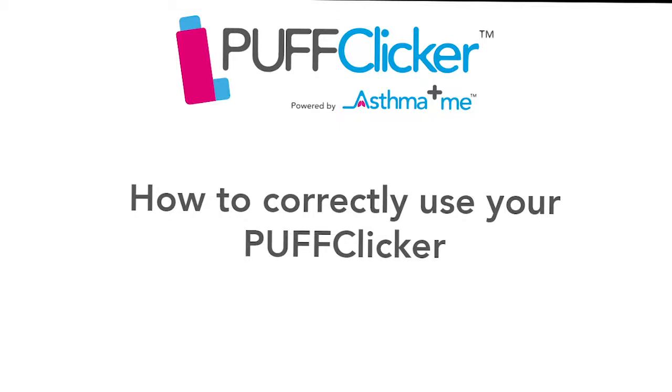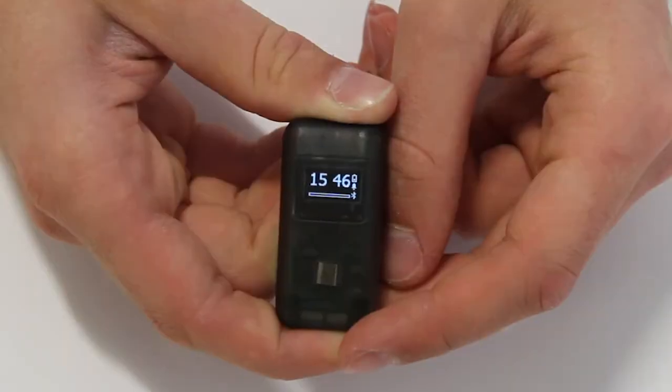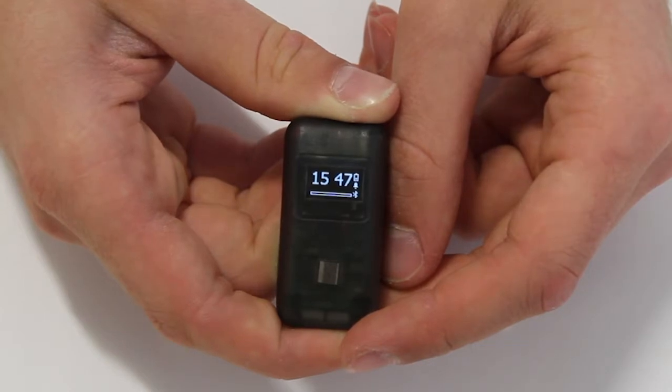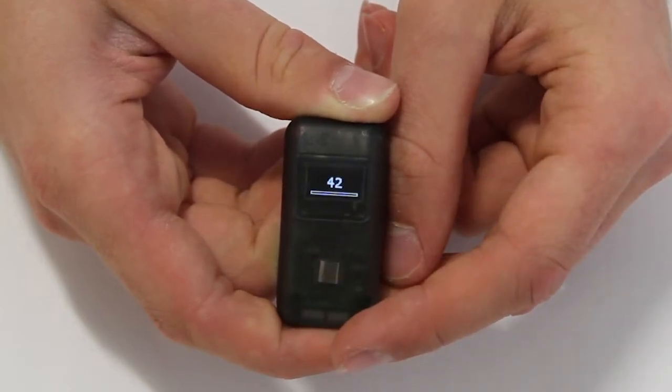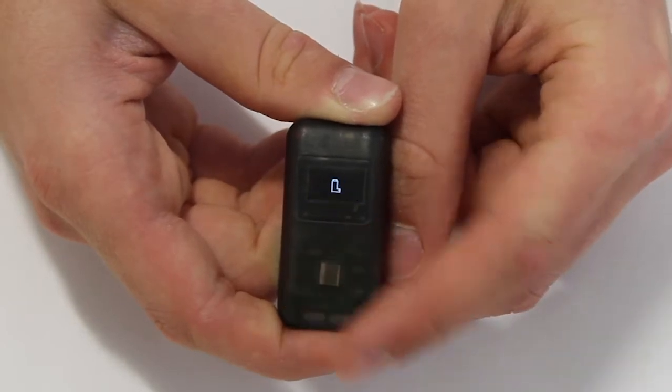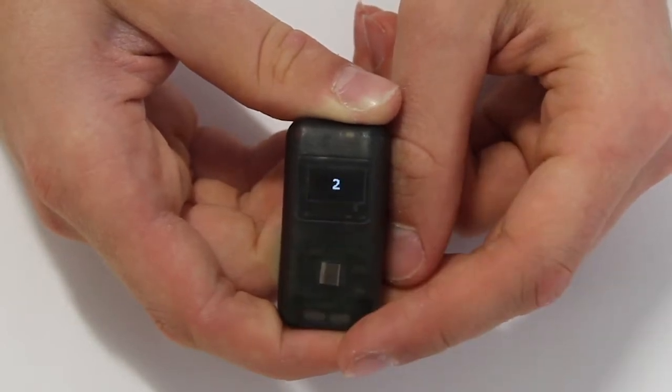To use your puff clicker correctly, you need to know that there are four screens: the clock screen, the steps if enabled, doses of inhaler, and the battery symbol.